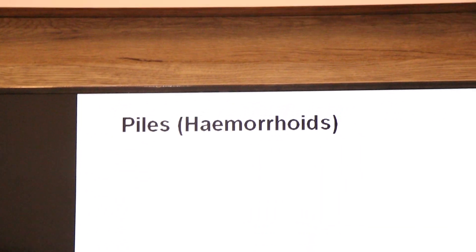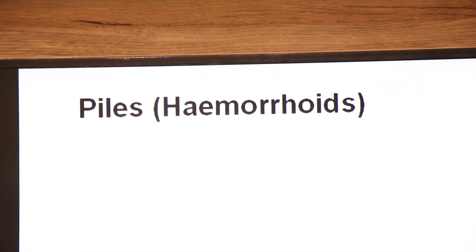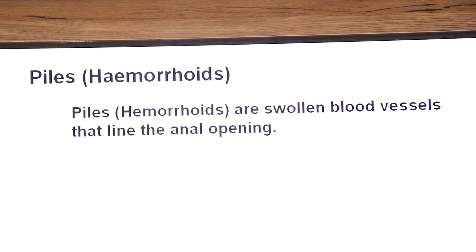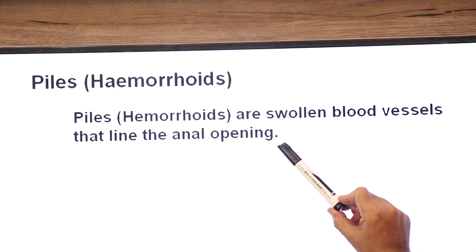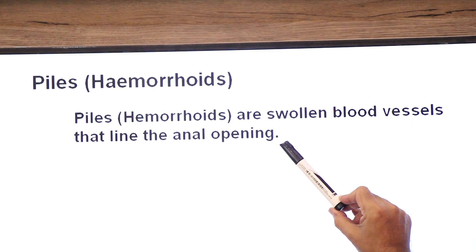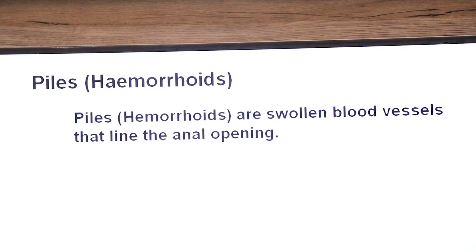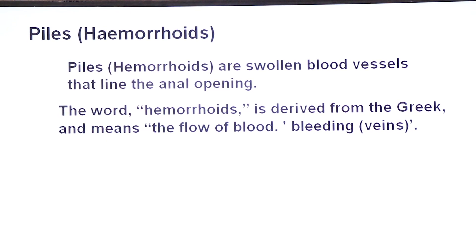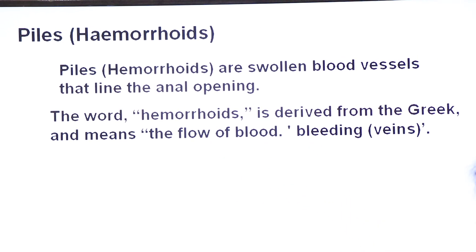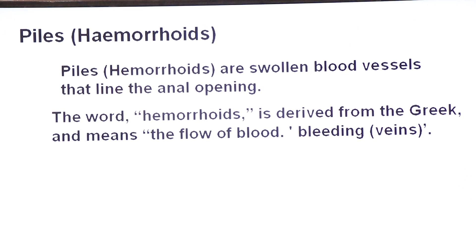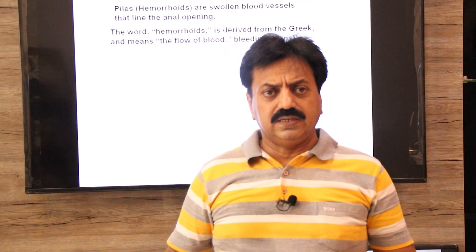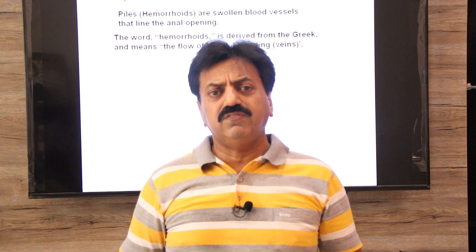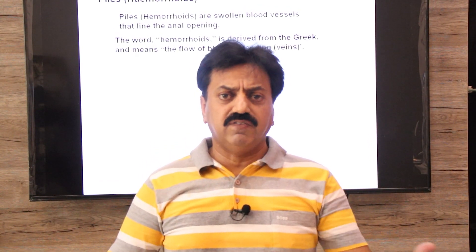Last in today's lecture, we will discuss piles — hemorrhoids. Piles or hemorrhoids are swollen blood vessels that lie in the anal opening. The word hemorrhoids is derived from Greek language and it means the flow of blood — meaning bleeding veins. Patients who have the problem of constipation exert force during defecation, and this force on the anal veins causes hemorrhoids to develop.